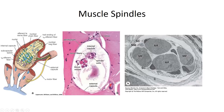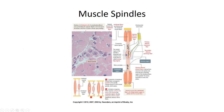The first type of intrafusal fiber is the nuclear bag fiber. It gets its name from the appearance of its central region, which expands out to account for an aggregation of centralized nuclei. This mid-region is also distinguished by the presence of a coiled dendritic process from a 1A afferent sensory nerve fiber. The second type of intrafusal fiber is the nuclear chain fiber, which looks more like a typical extrafusal muscle fiber with a uniform diameter and nuclei more evenly spaced out along the length of the fiber. Another distinguishing characteristic of both types of intrafusal fibers is that they are innervated by gamma motor neurons, whereas extrafusal fibers are innervated by alpha motor neurons.